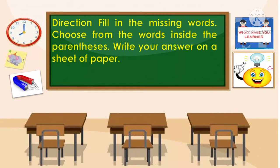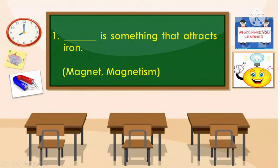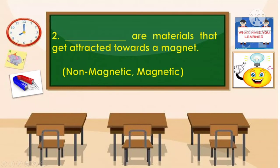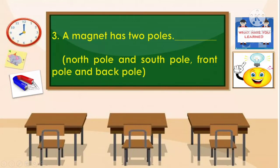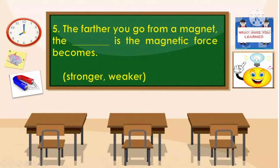Direction: Fill in the missing words. Choose from the words inside the parentheses. Write your answer on a sheet of paper. Item 1: Blank is something that attracts iron — magnet or magnetism? The correct answer is magnet. Item 2: These are materials that get attracted towards a magnet — non-magnetic or magnetic? The correct answer is magnetic. Item 3: A magnet has two poles — north pole and south pole, or front pole and back pole? The correct answer is north pole and south pole. Item 5: The farther you go from a magnet, the blank the magnetic force becomes — stronger or weaker? The correct answer is weaker.